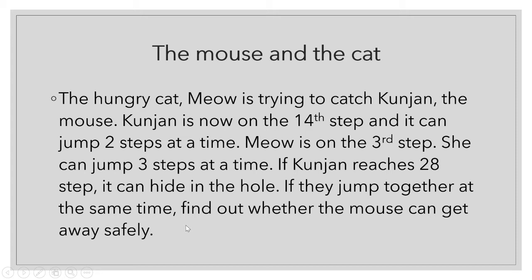Kunjan is the mouse and Meow is the cat. Naturally Kunjan is very tiny and Meow is big, so Meow can jump three steps at a time while running, and Kunjan is jumping two steps at a time. Meow was on the third step when she saw Kunjan standing on the 14th step. Both are going to take jumps at the same point of time — let us see whether Meow will be able to catch Kunjan or not.